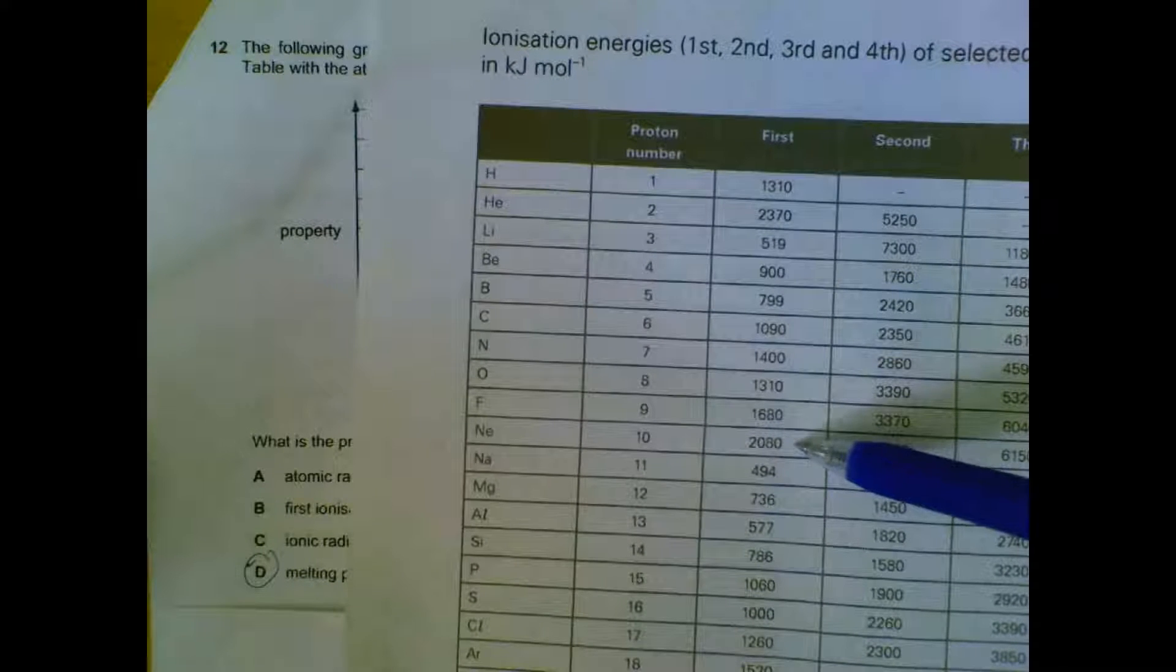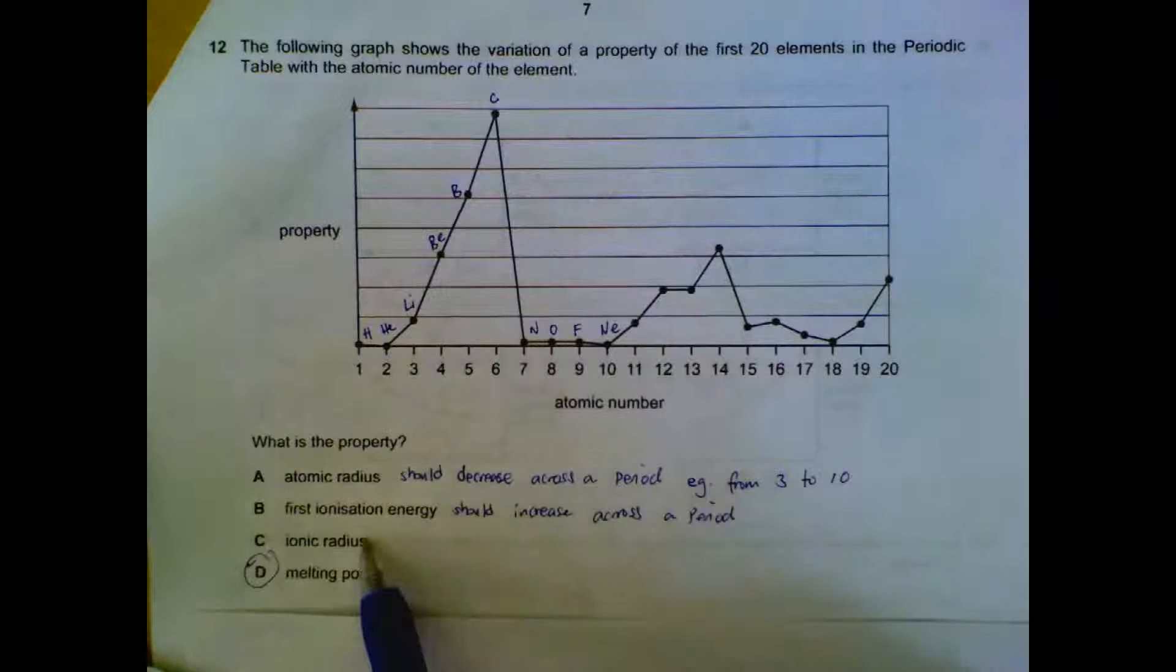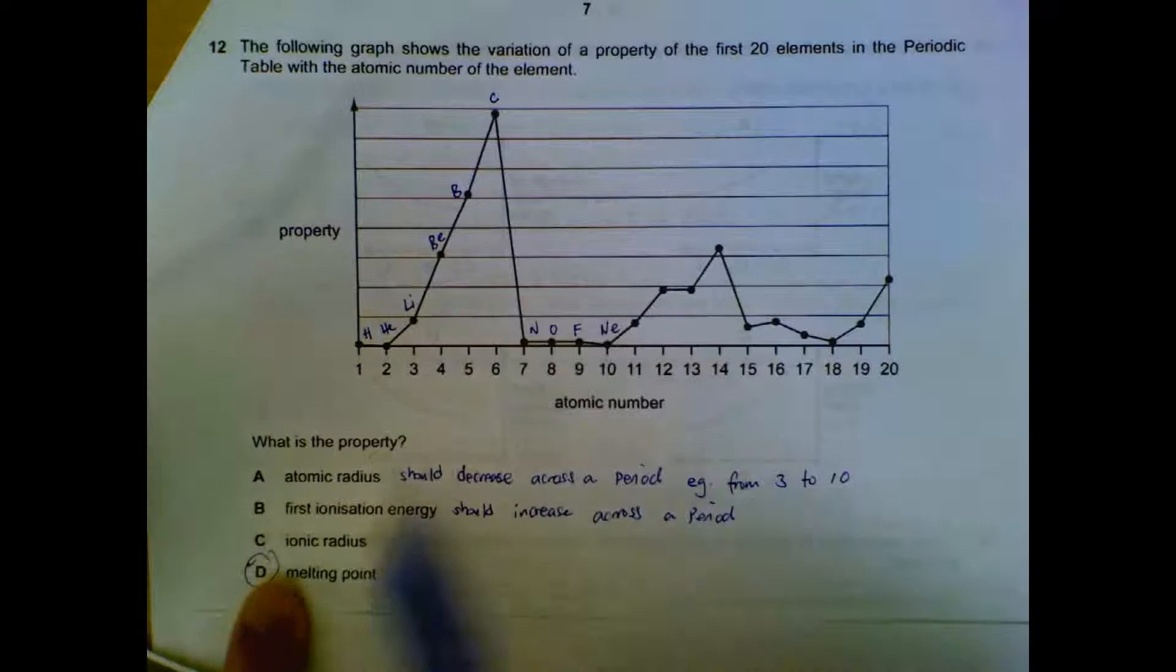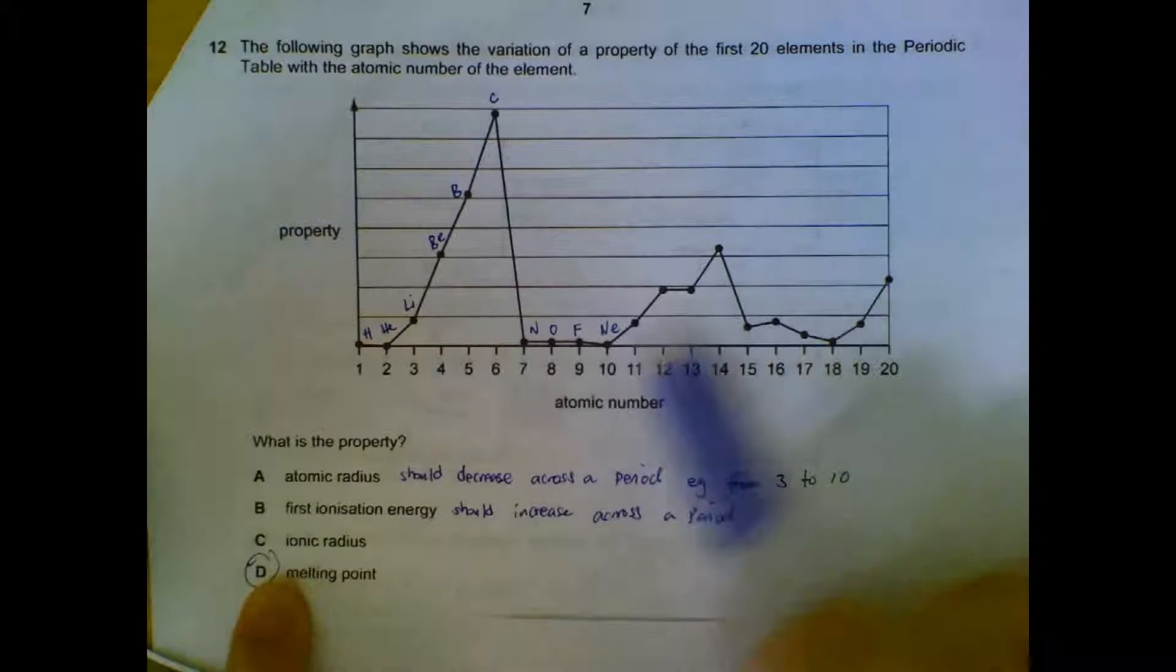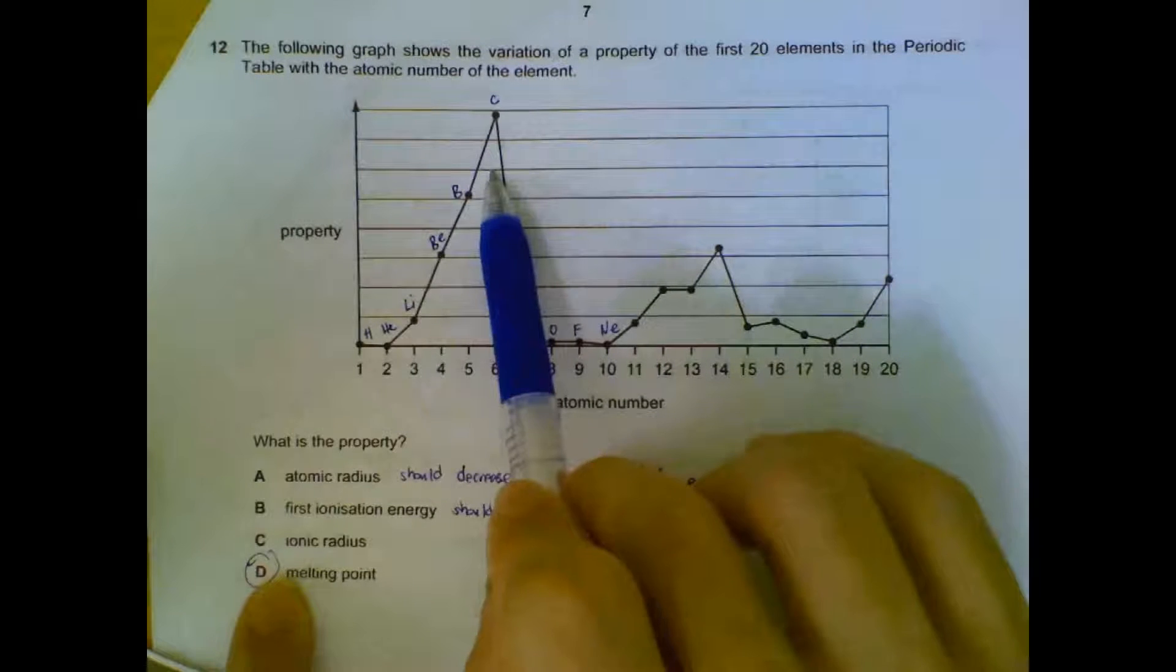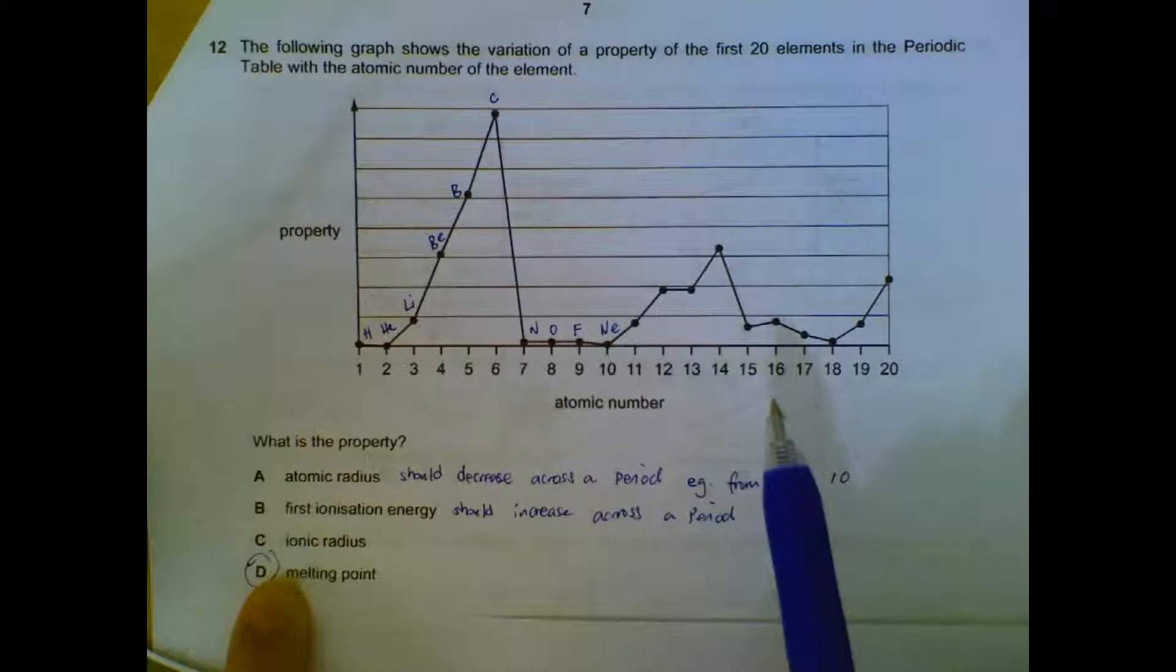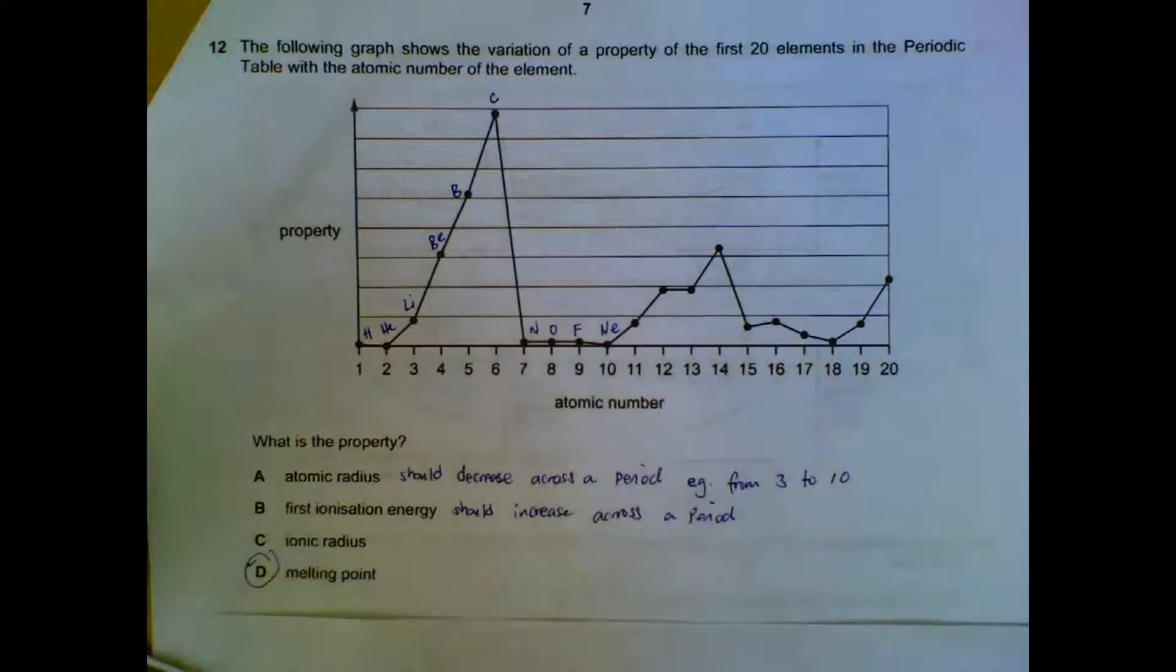Ionic radius - the ionic radius of one period, period 2, should be smaller than the ionic radius of the next period after it. So C is also out.